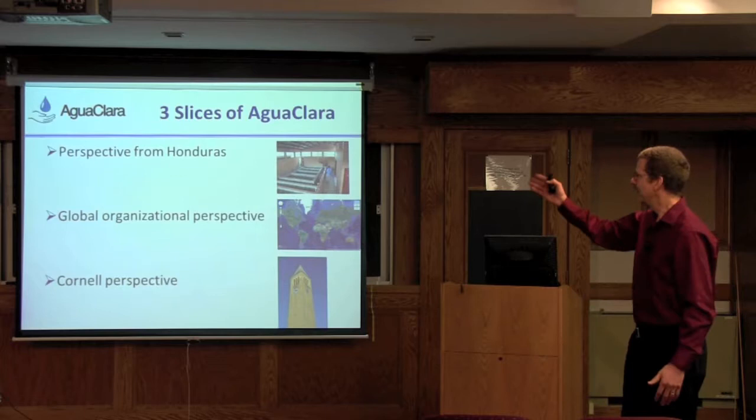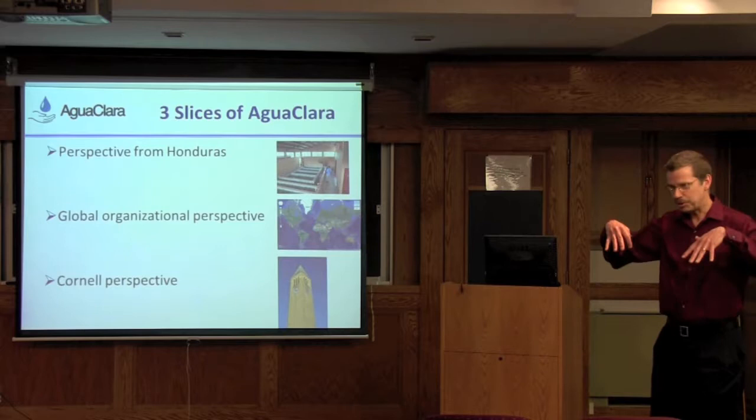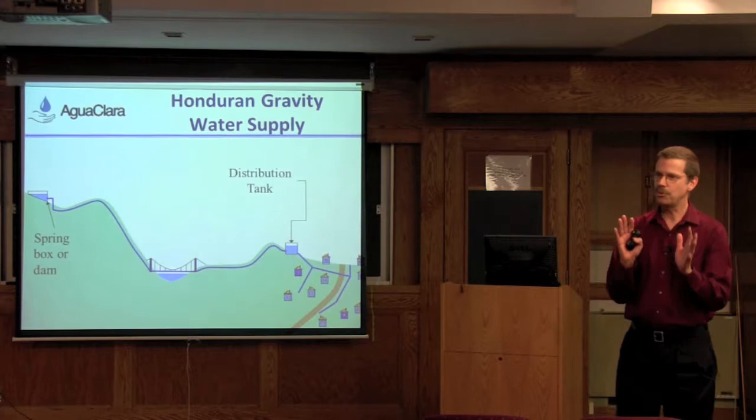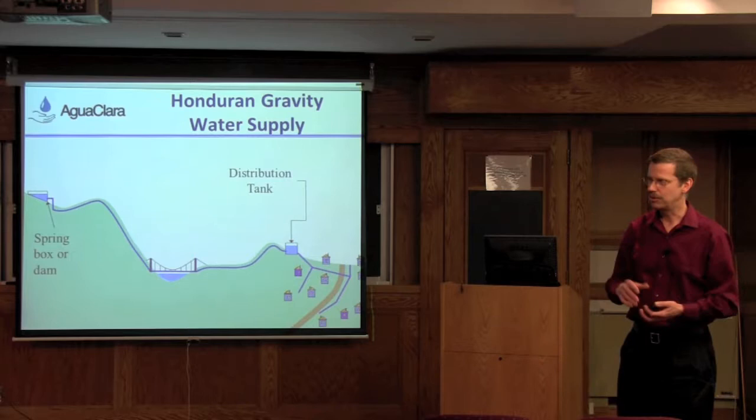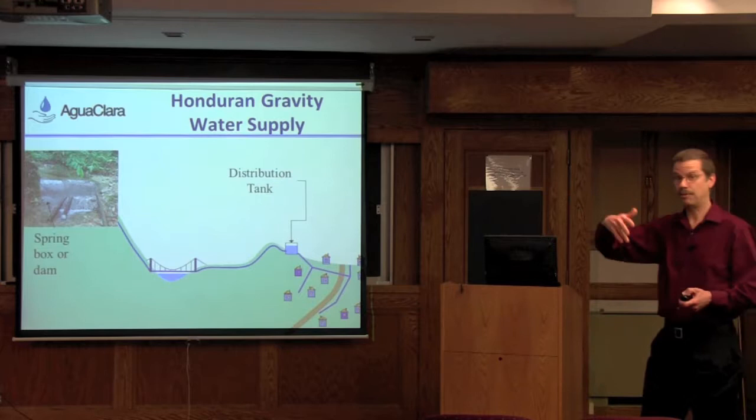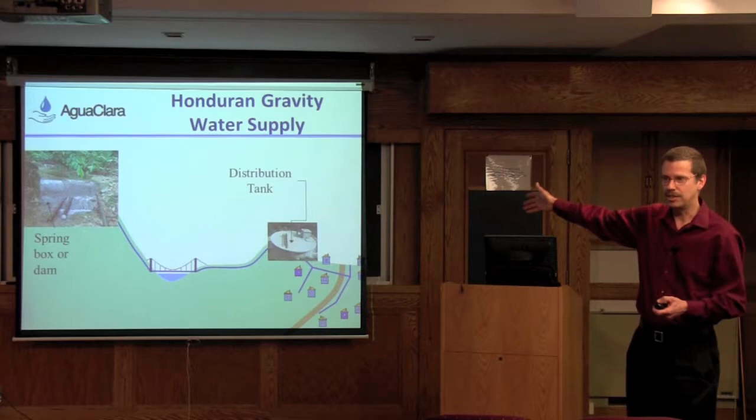I've been doing AguaClara since 2004, 2005, and trying to figure out how to talk about it is one of the challenges because it's like everything I do. I'm going to give you three slices: a perspective from Honduras, a global perspective, and then a Cornell perspective. In Honduras, the problem we're working on is water supplies. Honduras is mountains everywhere. Almost anywhere where there's a human settlement, there's a mountain that's higher, and there are streams up there. They go up in the mountains, find a spring or a little mountain stream, and take a pipe down to a distribution tank and then on to the town. So you get water out of your tap in your household.